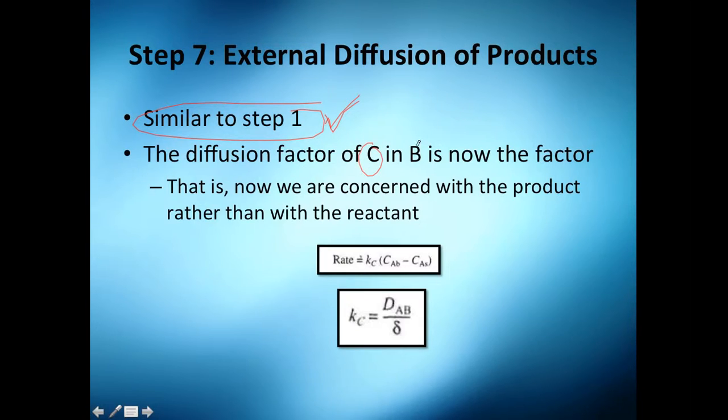And the diffusion factor of C in B is now the factor. Before was diffusivity of the reactant in B, and now is the diffusivity of my product in that substance. That is, now we are concerned with the product, of course.